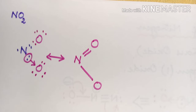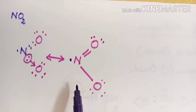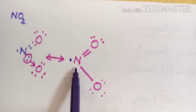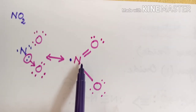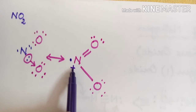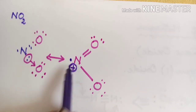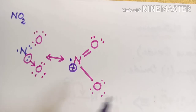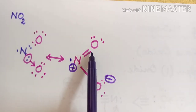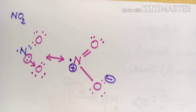With charge separation, nitrogen carries only four electrons so it carries a positive charge. This oxygen carries a total of seven electrons giving rise to a negative charge, while the other oxygen is neutral in nature.